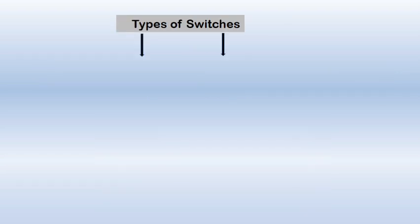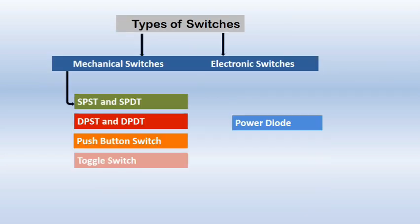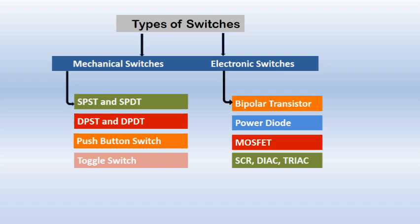We have different types of switches: mechanical switches and electronic switches. In mechanical switches we have single pole single throw, single pole double throw, double pole single throw, double pole double throw, push button switch, toggle switch, and many more. In electronic switches we have bipolar transistor as a switch. We can also use power diode, MOSFET, SCR, DIAC, and TRIAC as switches.